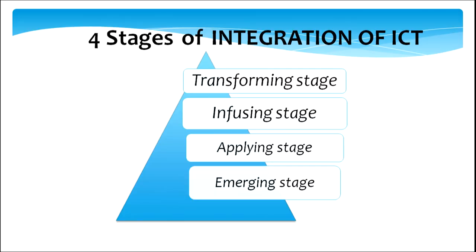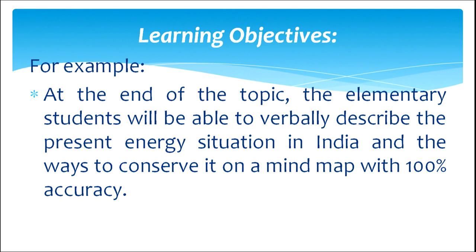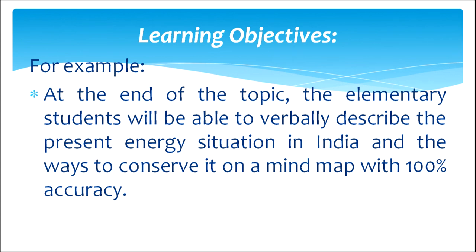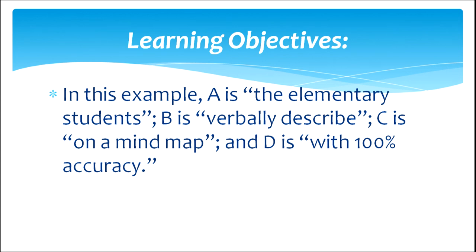We have seen the four stages of integration of ICT: the transforming stage, infusing stage, applying stage, and emerging stage. In these different stages, we need to formulate learning objectives based on the kind of approach being used. The learning objectives, based on the ABCD model, could involve all four components. For example: at the end of the topic, the elementary students will be able to verbally describe the present energy situation in India and the ways to conserve it on a mind map with 100% accuracy. Here A is the elementary student, B is verbally describe, C is on the mind map, and D is with 100% accuracy.